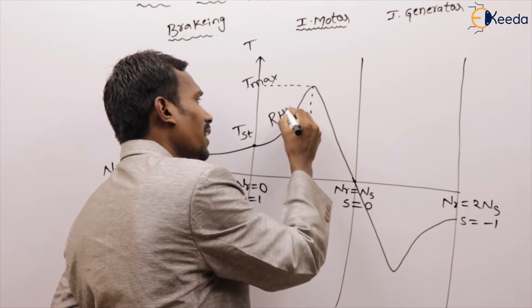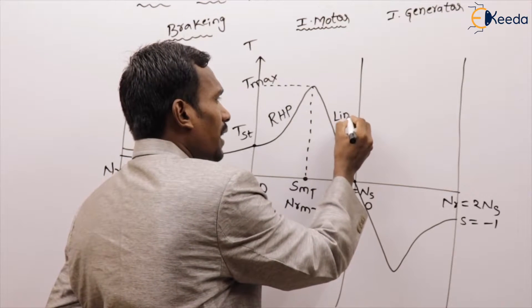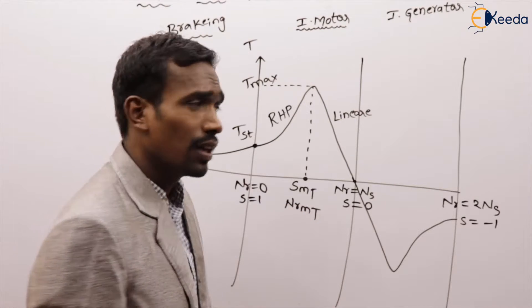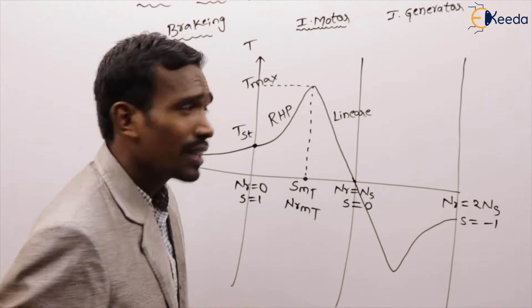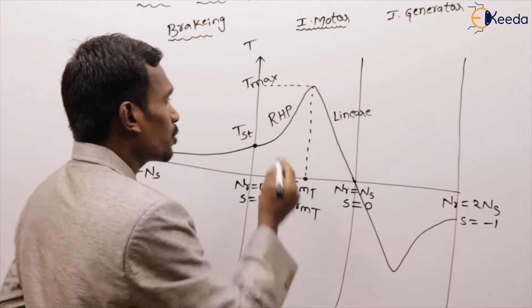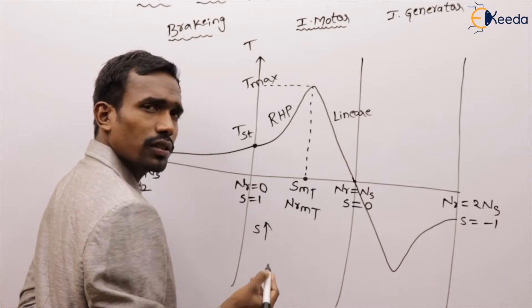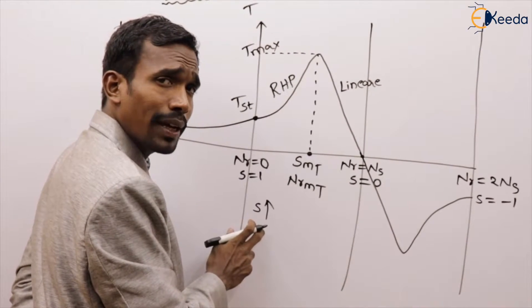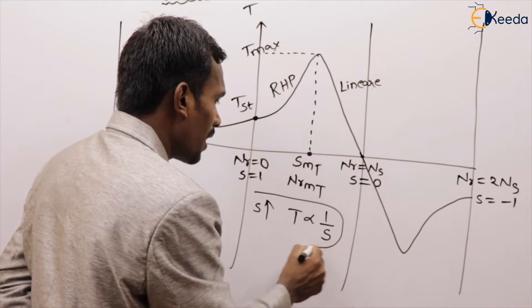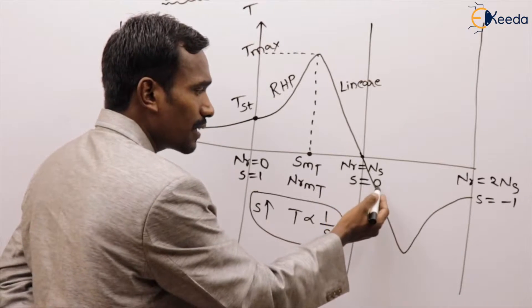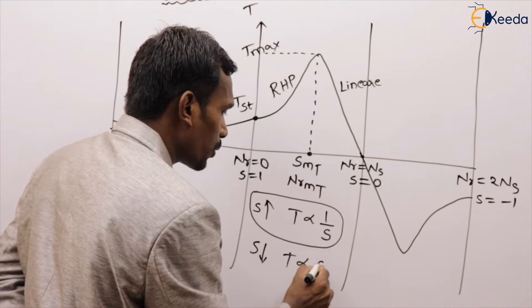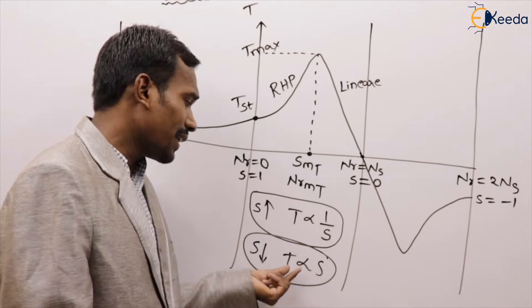The torque-slip curve is nonlinear. The nonlinear portion is a rectangular hyperbola, while the other portion is a linear curve. At high slip values, torque is inversely proportional to slip. At low slip values (near synchronous speed), torque is directly proportional to slip.